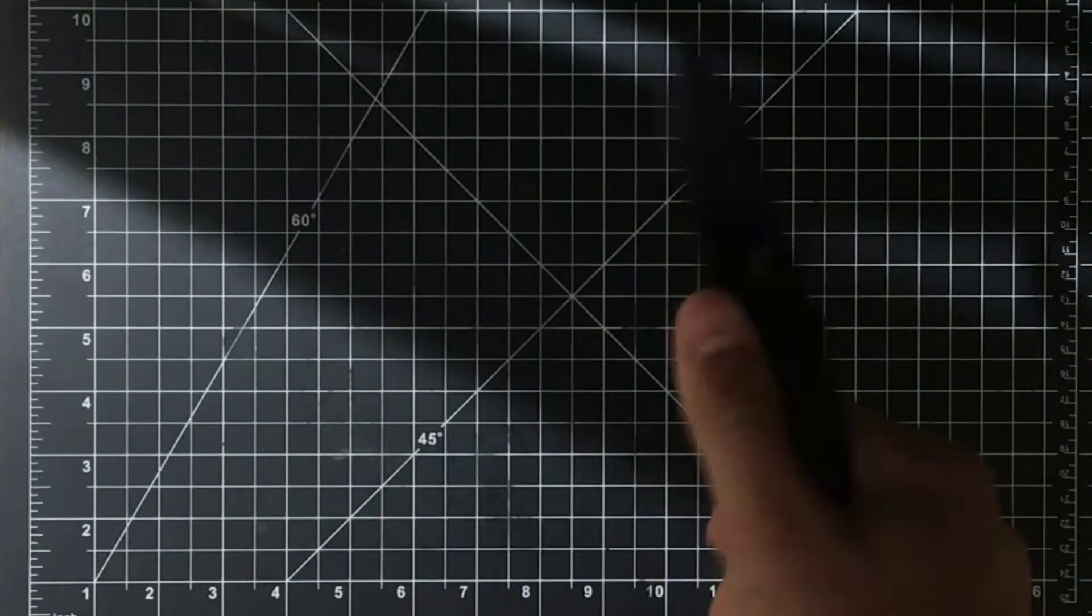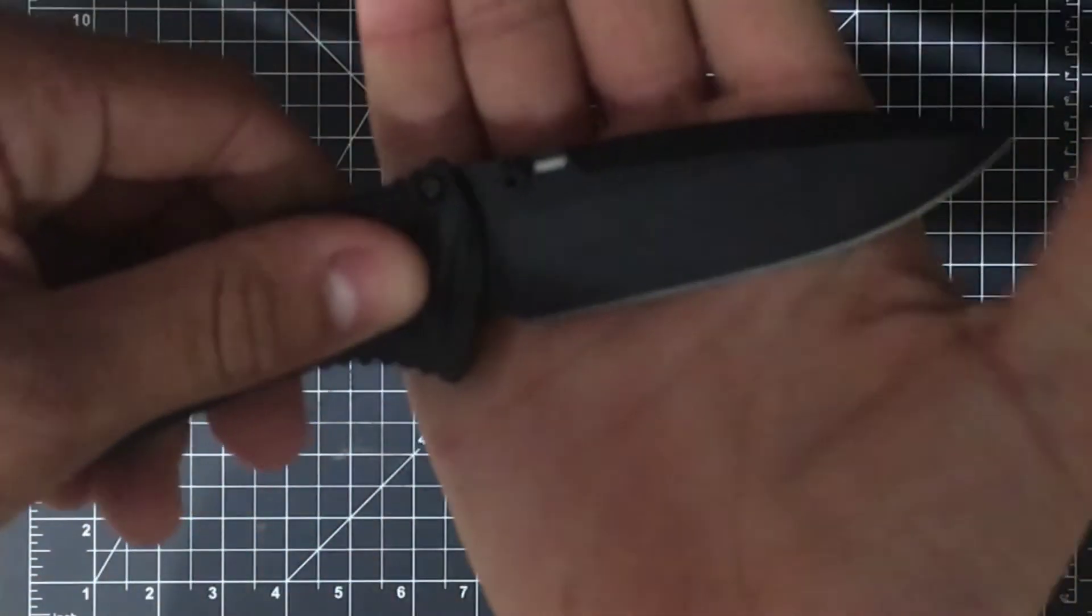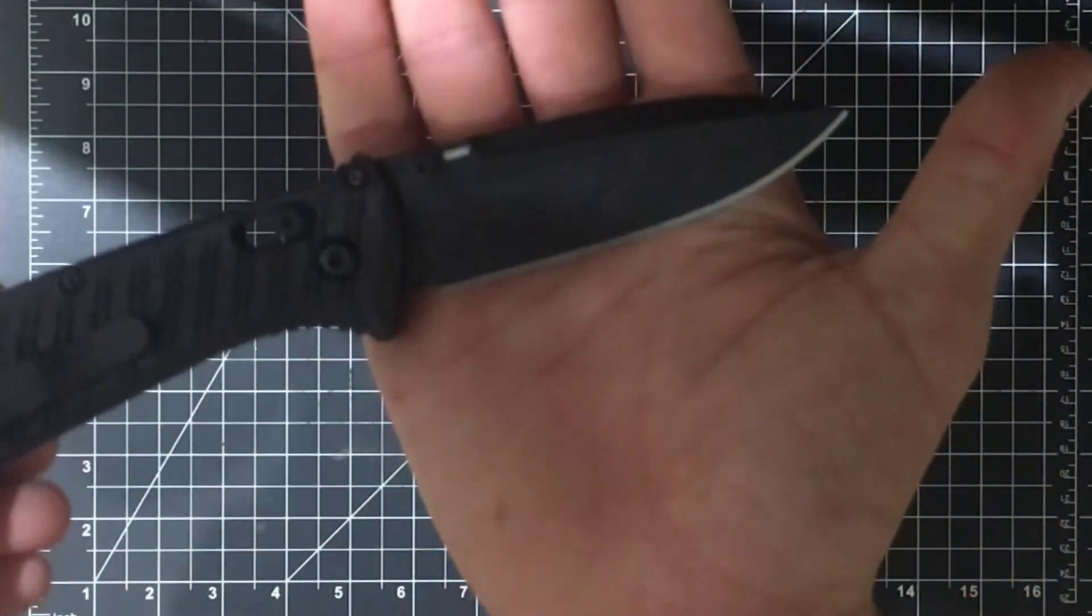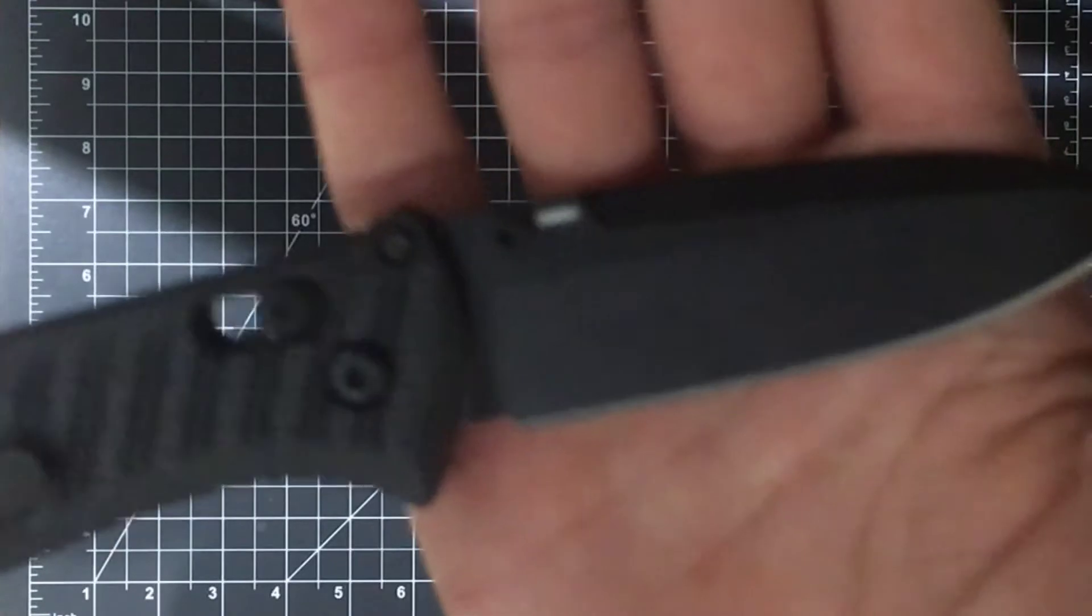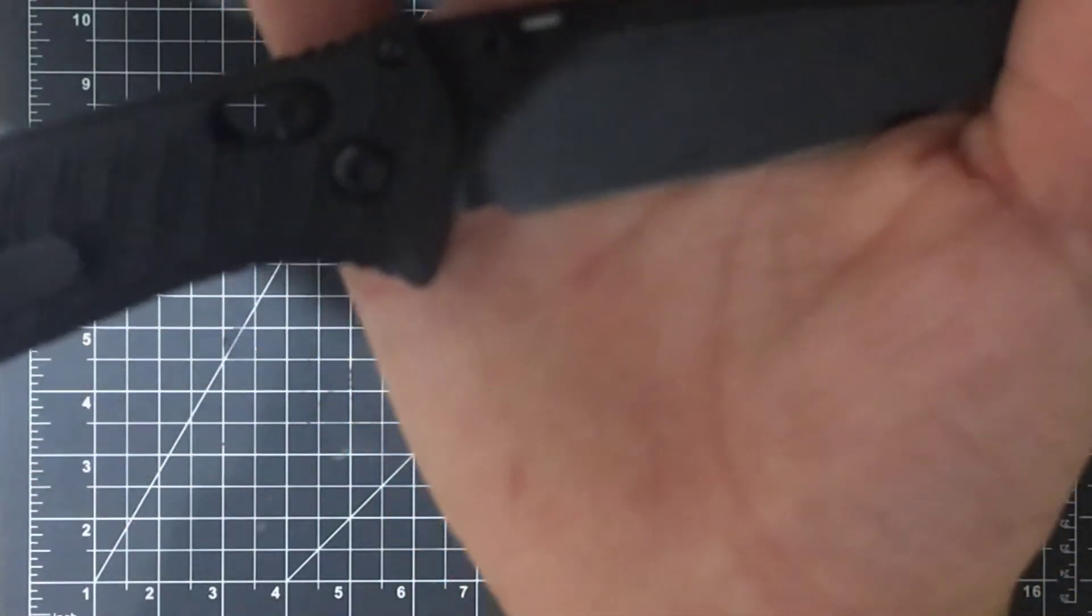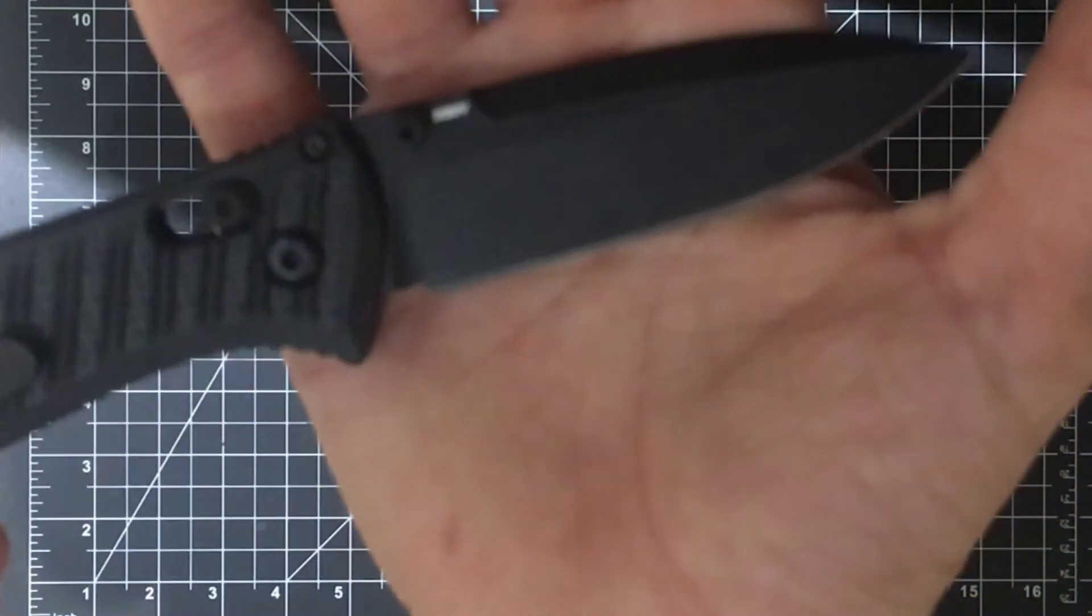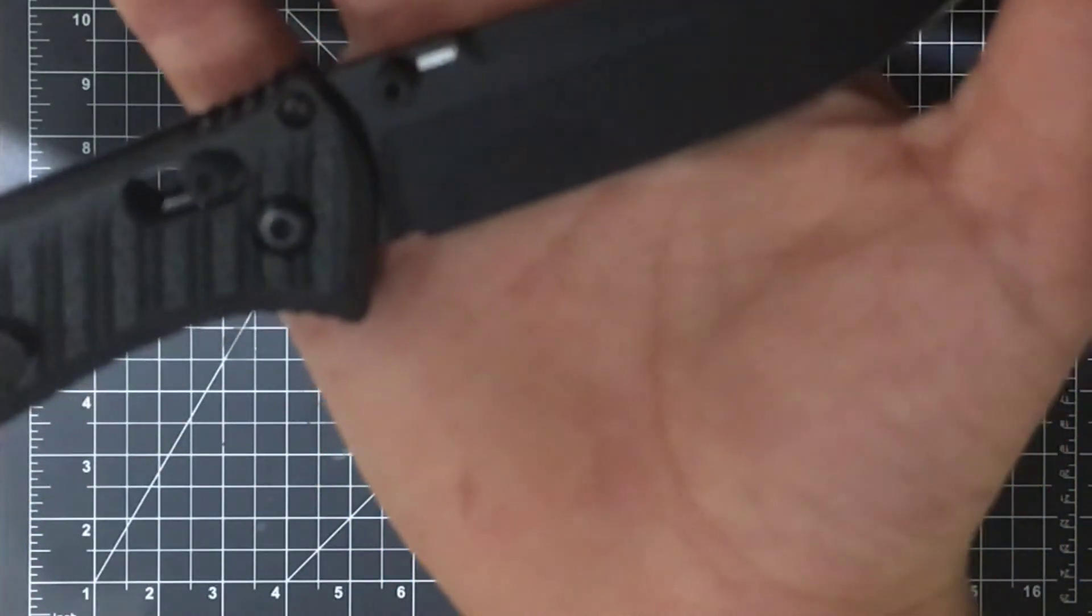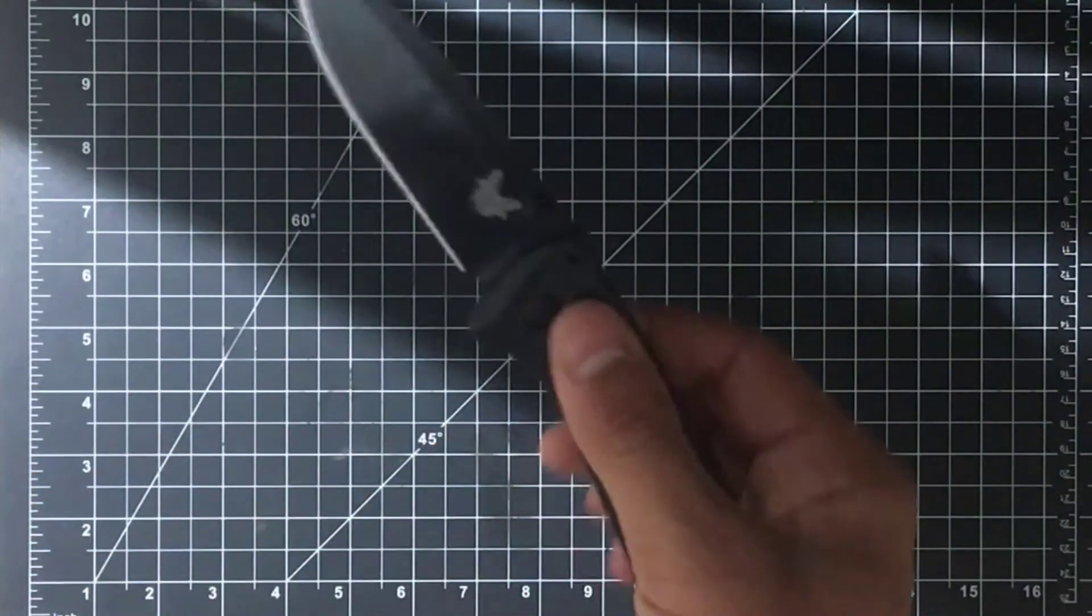And the blade steel on this is CPM S30V. Let's get it to focus, if it will. Let's try and get it to focus. Focus. Please. Eh, I guess it's not going to focus today. So it's S30V.